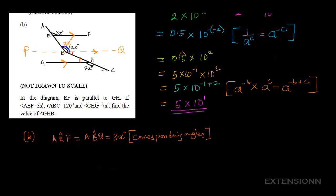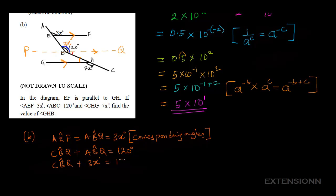So we have angle ABQ as 3x degrees. Now, the total angle at B is 120 degrees, so angle CBQ plus angle ABQ equals 120 degrees. Since ABQ is 3x degrees, we write CBQ plus 3x degrees equals 120 degrees, so angle CBQ equals 120 minus 3x degrees.